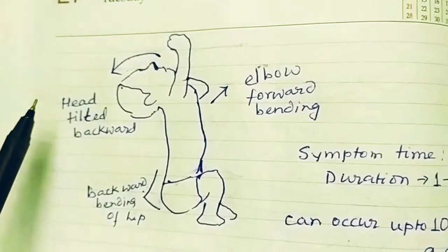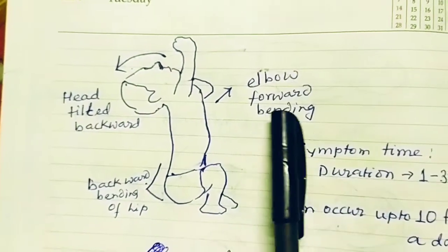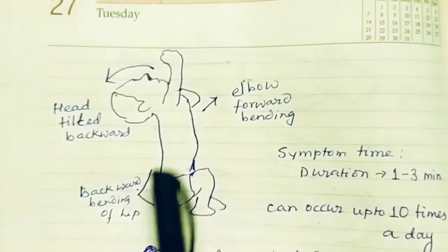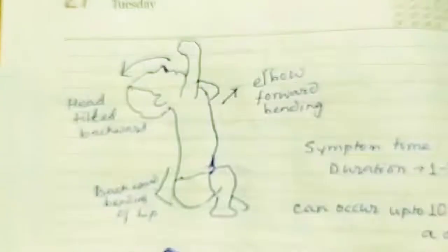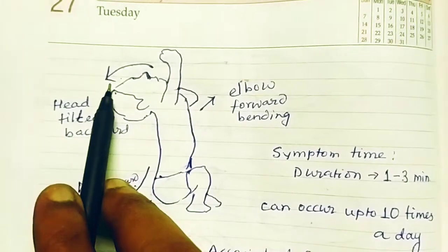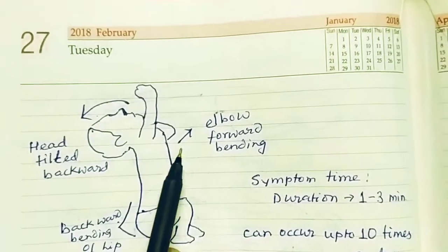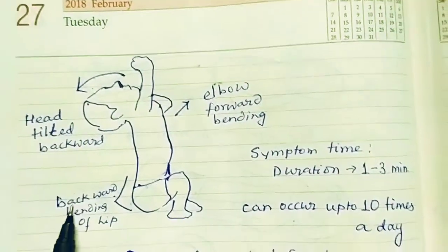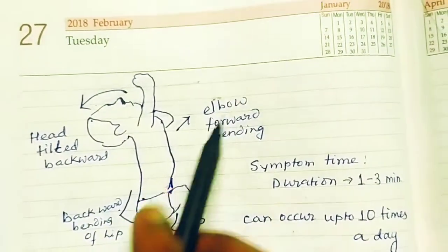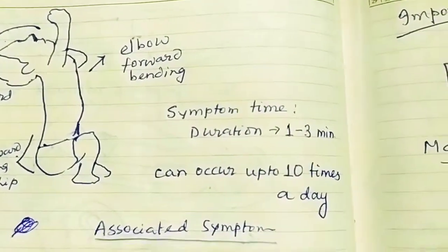The head is always tilted backward. The elbow will be in forward bending, and the hip will be in backward bending. So the head is backward, the hip is backward, and the elbow is forward. This characteristic posture was also asked in competitive exams.